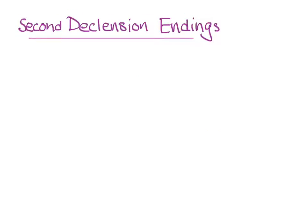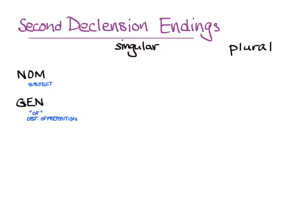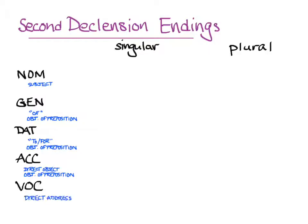Now we need endings to add to those stems. We'll make a chart for the singular and plural. Greek has a dual too, but it's rare enough that we won't teach it. For the nominative, used for the subject of a sentence and things that agree with it; the genitive, which does many things including possession and can be translated with the English 'of,' and is used as the object of some prepositions; the dative, for indirect objects and things translated by 'to' or 'for,' also the object of some prepositions; the accusative, especially for direct objects and the object of some prepositions; and the vocative, used only for direct address.